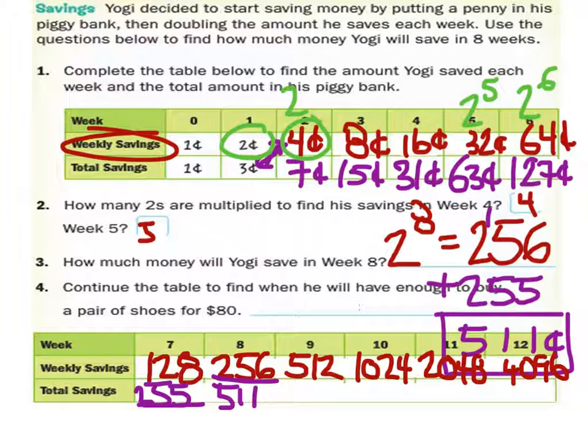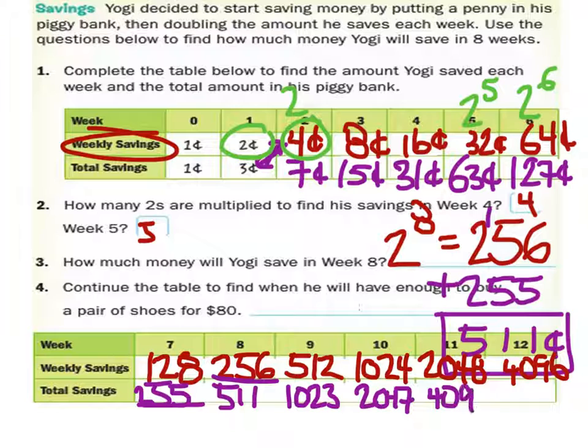It would take much more than three days. 10, 23, 20, 47, 40, 95. So this right here would be, so 109 or 18. Well, there's $81.91. How many weeks will it take to save 80 bucks? About 12. 12 weeks. So yeah, this is going to take 12 weeks.